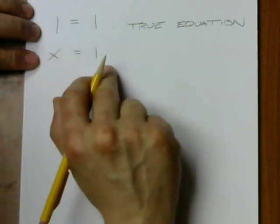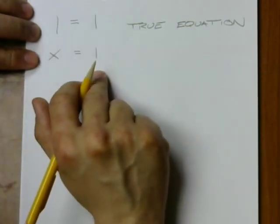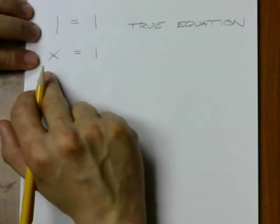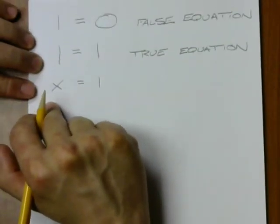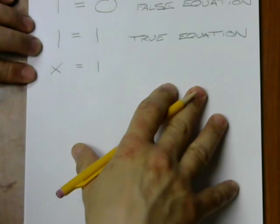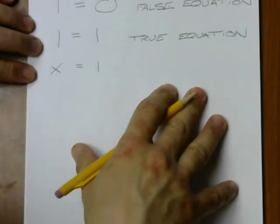This might be true or false depending on what x is. If x is 1, this is true. If x is 0, this is false. So for some values of x, this equation is going to be true.